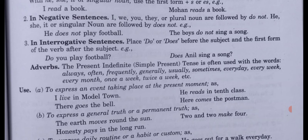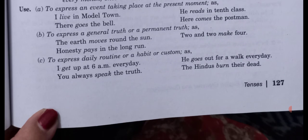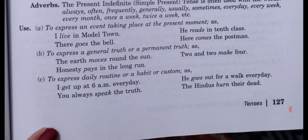Uses of simple present: first, to express an event taking place at the present moment — for example, 'I live in Model Town', 'He reads in 10th class', 'There goes the bell', 'Here comes the postman'. Second, to express a general truth or permanent truth — for example, 'The earth moves around the sun', 'Two and two make four', 'Honesty pays in the long run'.